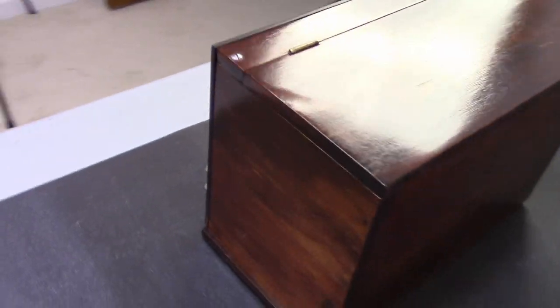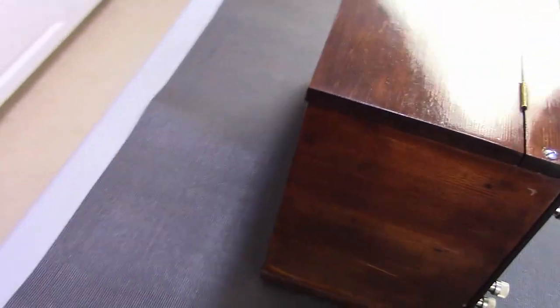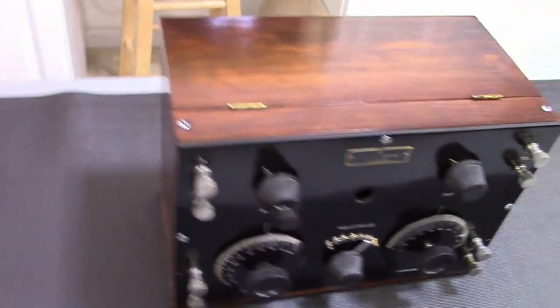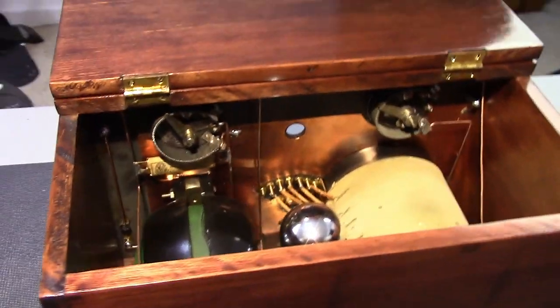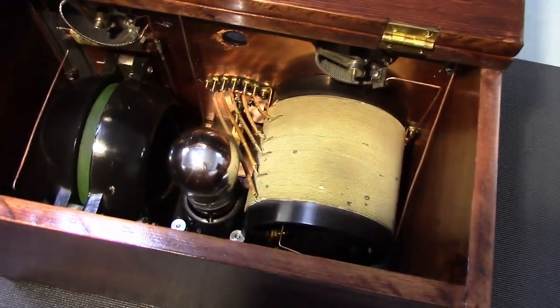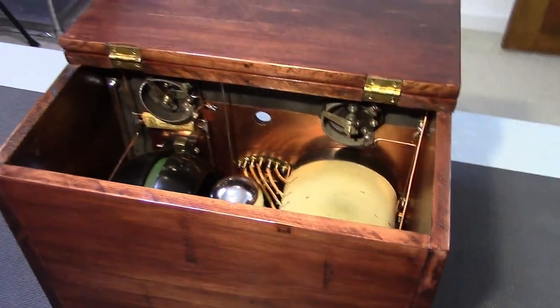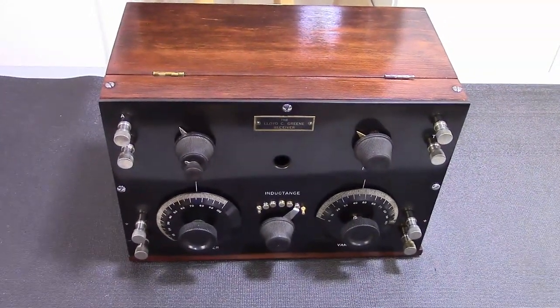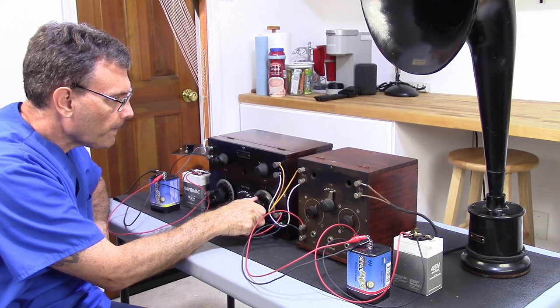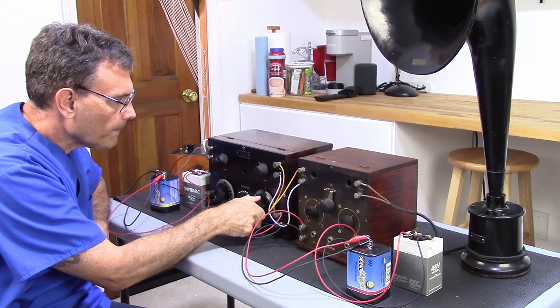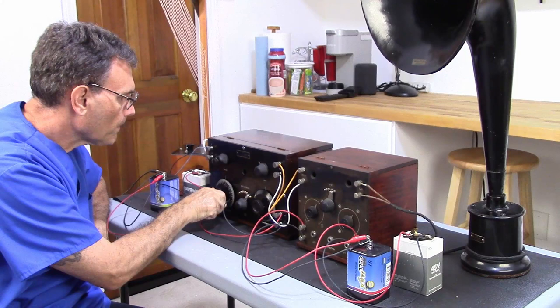So now you can see all the irregularities in the case which gives it its character and it makes it look accurate for the time. Now typically the inside of the case is not finished. However, I do think it adds a little bit of character to this so I went ahead and did that. But I didn't put a lot of effort into it. Just got a little coat on there and I think it looks pretty good. Now as I promised, we're going to go ahead and hook this to an amplifier and see how it sounds.